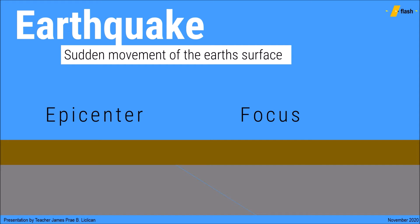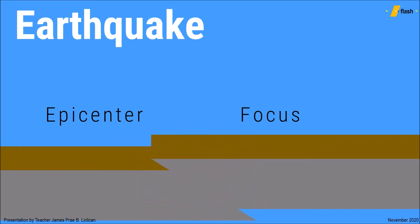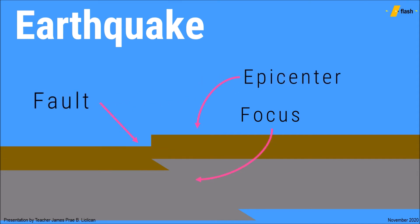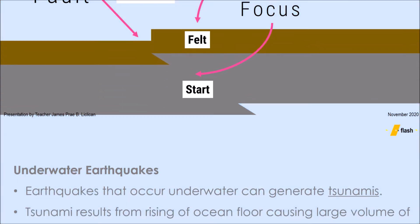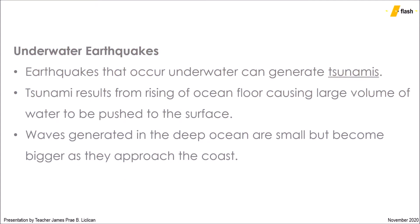The location in which the earthquake starts is called the focus or the hypocenter. The energy travels to the surface as an earthquake, and directly above the focus is where the epicenter is located. The epicenter is where the strongest earthquake is felt and where most destruction happens. When an earthquake occurs near or under the seabed, it creates a higher than usual tidal wave, which is called a tsunami.